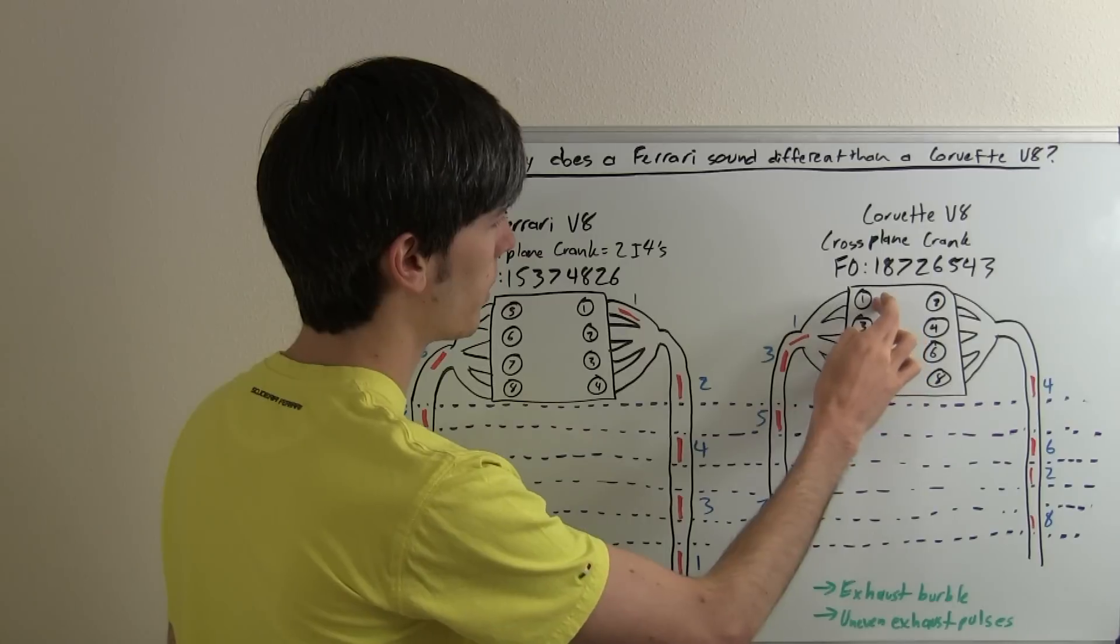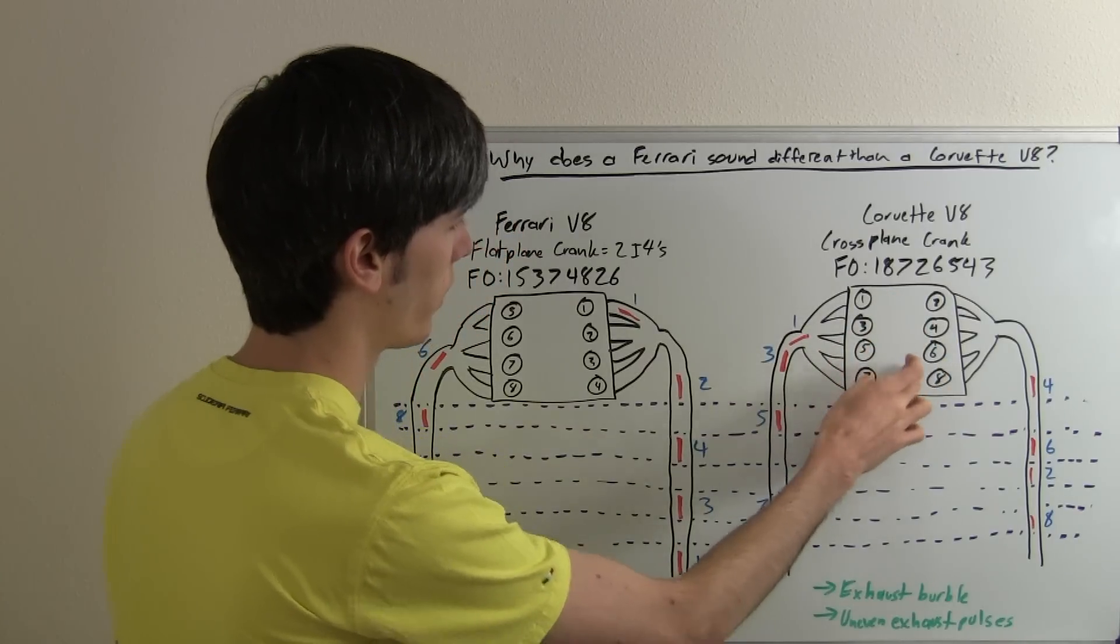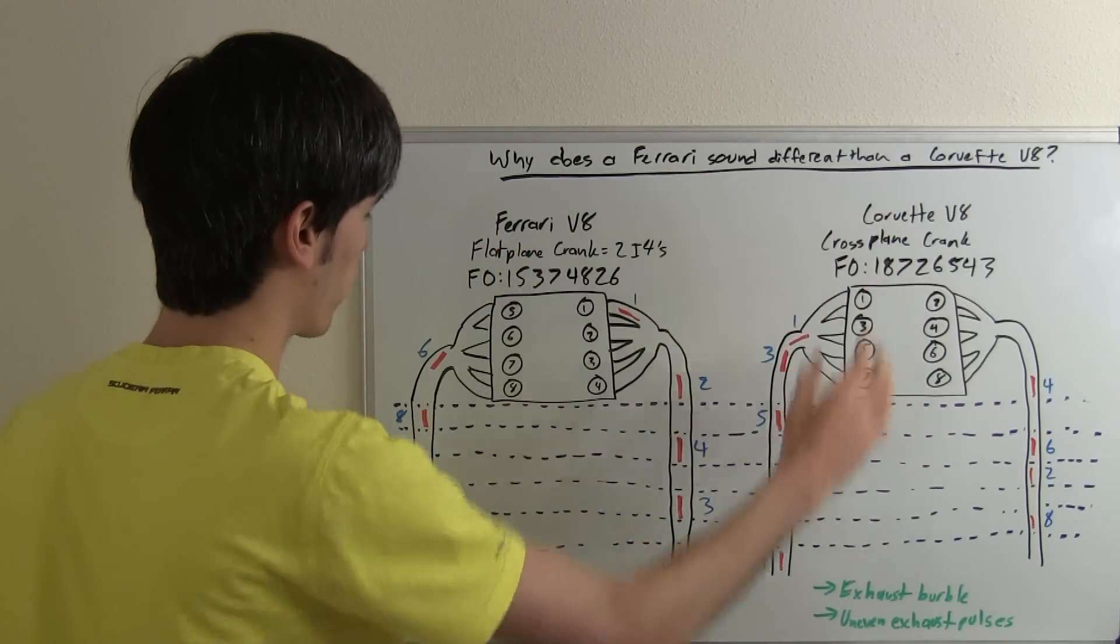So on a Corvette, it's going to be 1, 2, 3, 4, 5, 6, 7, 8 coming down, this being the front of the car.